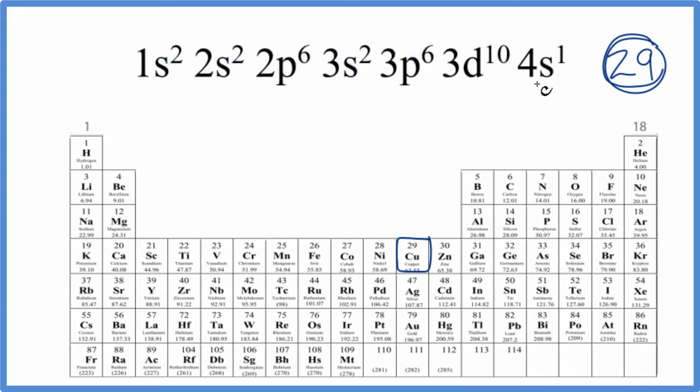We could write this in abbreviated or condensed notation. Right now it's in the long form notation for electron configurations. The way we do that is we find the noble gas before copper. So copper is 29, we go back, and here's 18, argon. So instead of writing all 18 of these electrons, we could just write Ar in brackets.